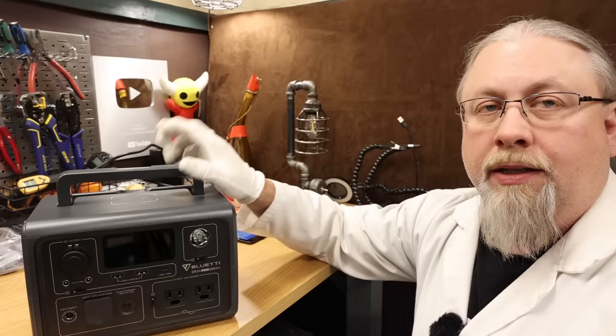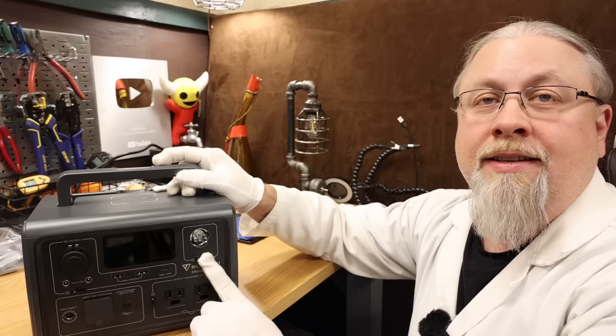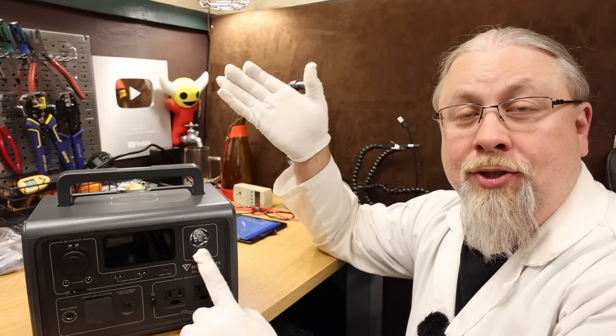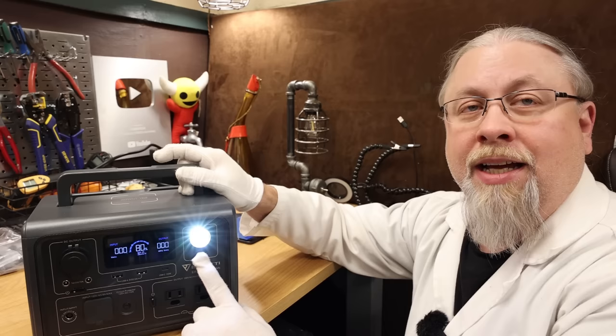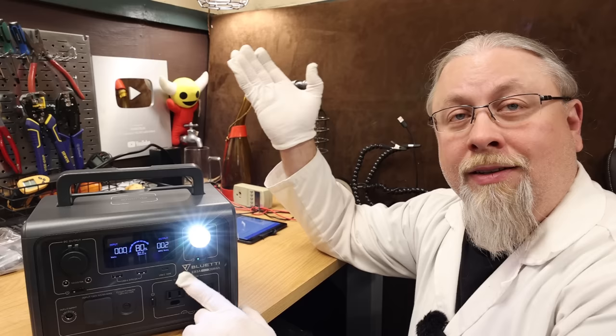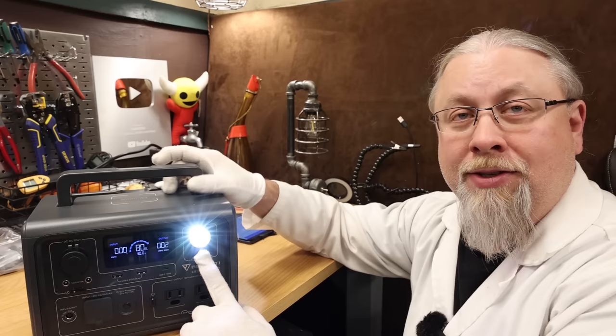There is one last feature on the EB3A that I have not yet tested, and that is the most important feature any solar generator could have, and that's the flashlight. Does this have the SOS like all the others? First press is usually low, then it goes to high, then it goes to SOS. Okay, there's low, there's high, and is it going to be time to flag down our little buddies upstairs? Three, two, one, start the music.